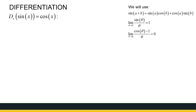So let's jump right in. We want to show that the derivative of sine of x is cosine of x. We will use the sine of the sum of two angles: sine of a plus b equals sine a cosine b plus sine b cosine a. We're going to use that formula and the two special limits.